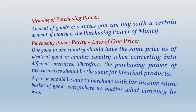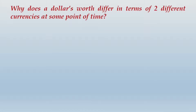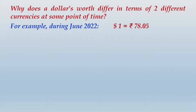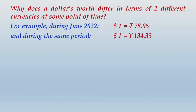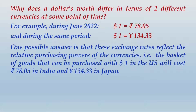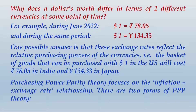Why does a dollar's worth differ in terms of two different currencies at some point of time? For example, during June 2022, we observe that dollar 1 equals rupees 78.05, and during the same period, dollar 1 equals Japanese yen 134.33. One possible answer is that these exchange rates reflect the relative purchasing powers of the currencies — that is, the basket of goods that can be purchased with dollar 1 in the US will cost rupees 78.05 in India and yen 134.33 in Japan.